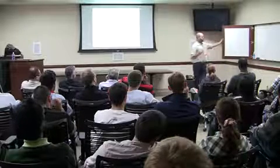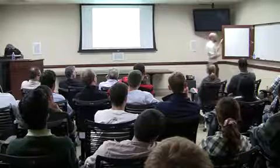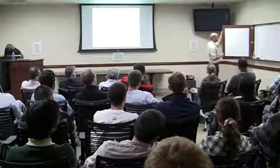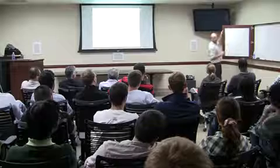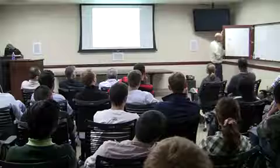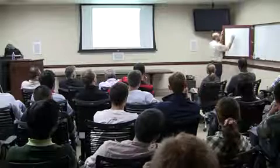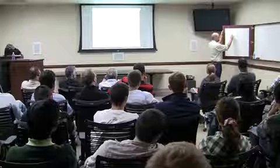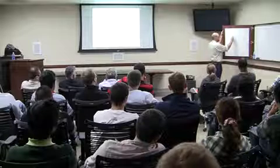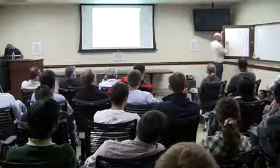Steve Strogatz would recommend just analyzing this thing graphically, and I love that way to think about it. I can immediately tell you everything about what the system is going to do. Just by the way it crosses at one and negative one — x-dot is positive here, the velocity is positive, so in this region the flows are going to be going to the right. In this region x-dot is negative, so flows are going to be going to the left.